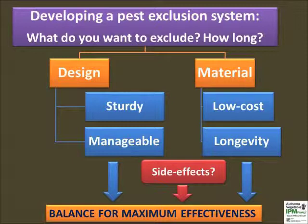Also think about possible side effects of using a screen. For example, using 40 or 50 mesh insect net can exclude small insect pests, but it will also exclude beneficial insects and pollinators. Weed control is another limitation due to raised temperatures in the net house. The following slides will provide results from various design and material studies completed in Alabama.